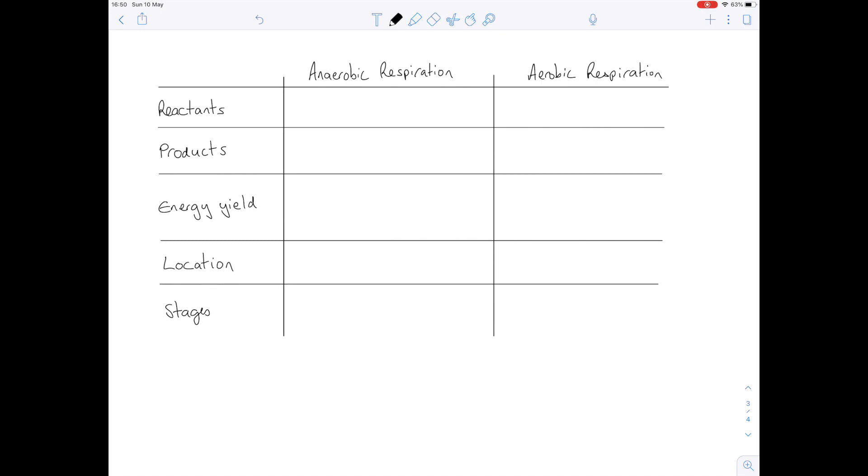Well in anaerobic respiration we know that the only reactant is glucose. We do not require oxygen for anaerobic respiration. That's why it occurs because we don't have any oxygen. Aerobic respiration however requires both glucose and oxygen.